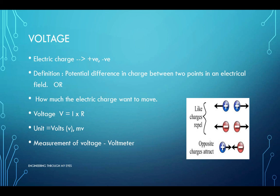Positive charges and negative charges repel each other. And if we have a positive and a negative charge, then those charges will attract each other. We define voltage as a potential difference in charge between two points in an electric field. Or, in more simpler words, how much the electric charge wants to move from one point to the other.